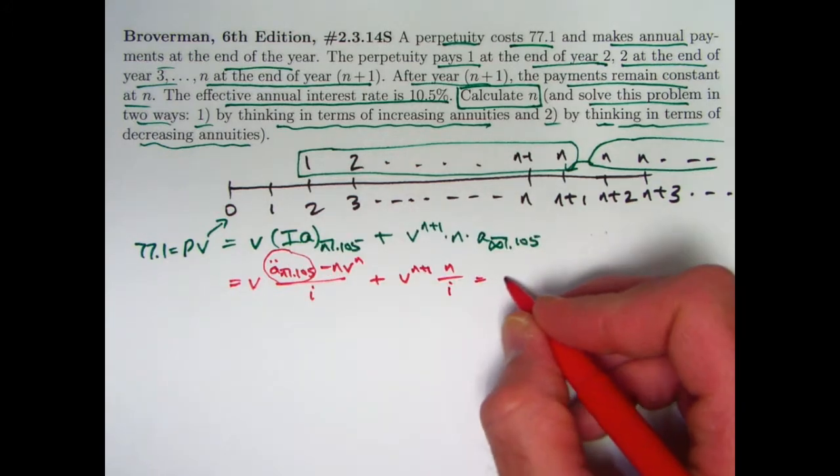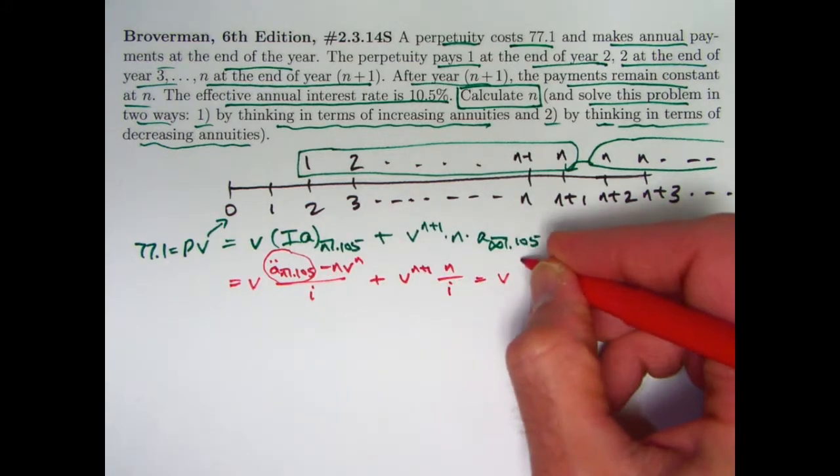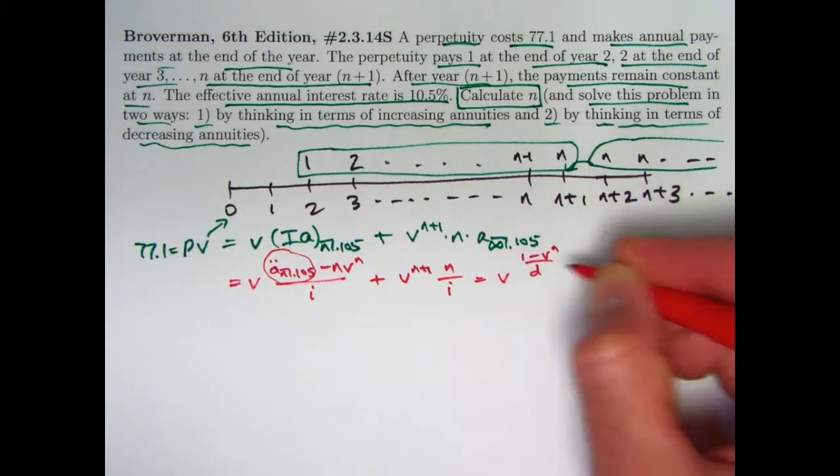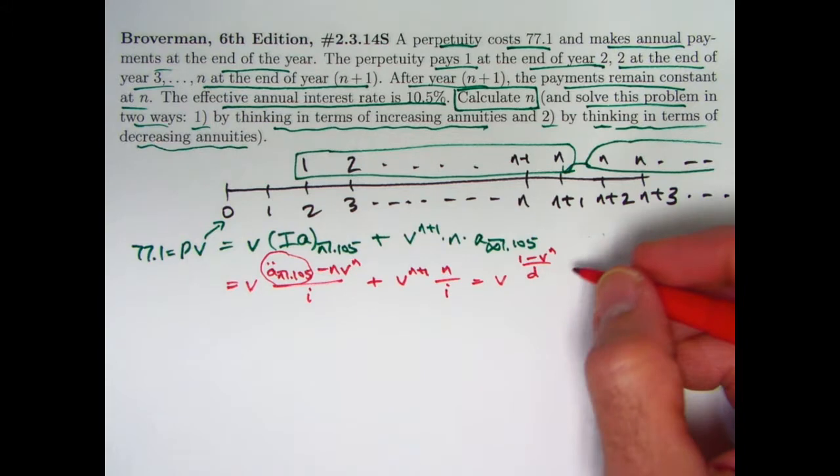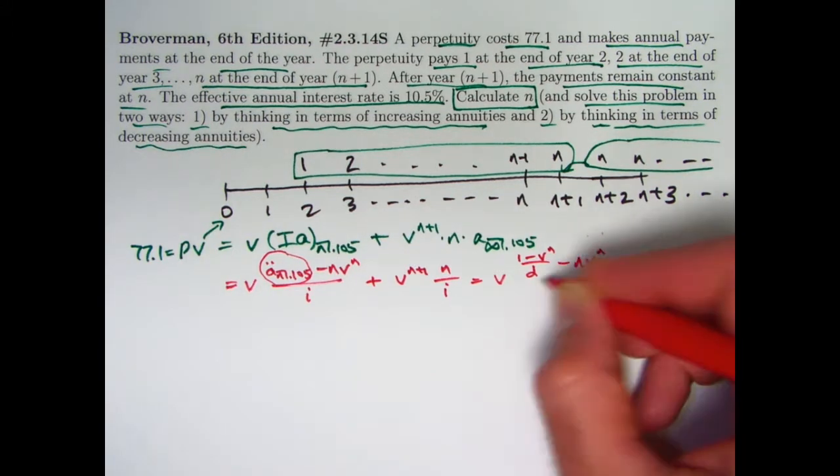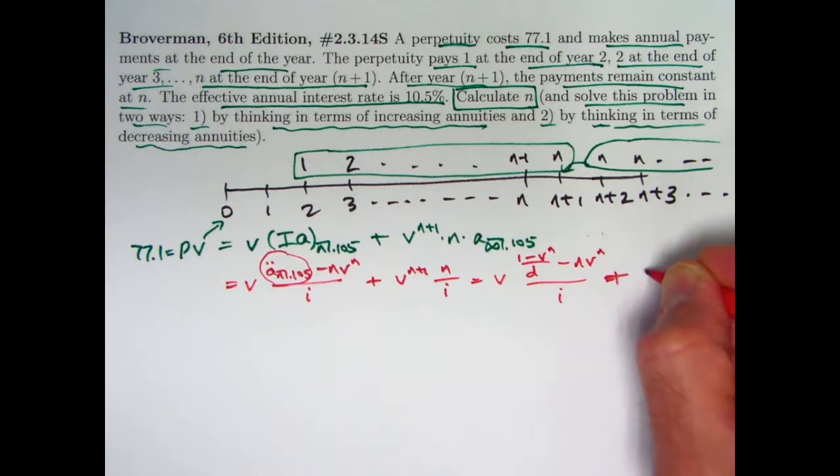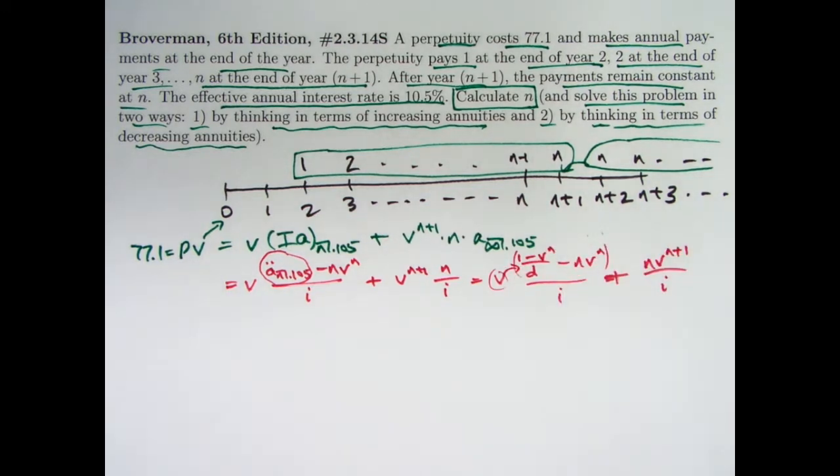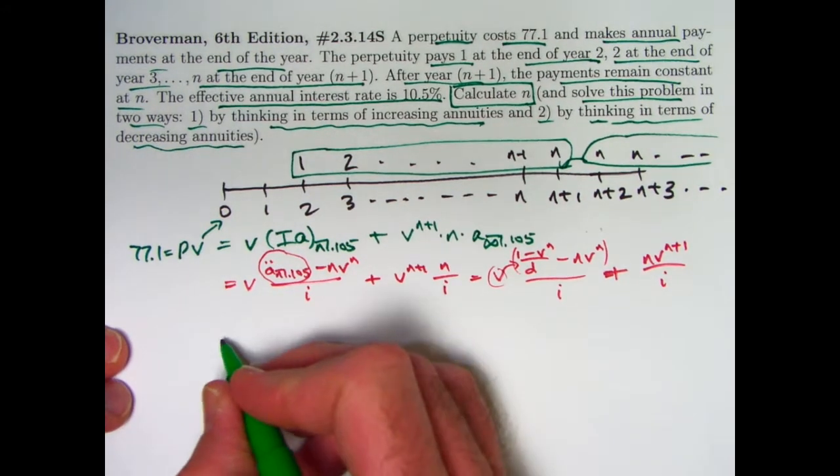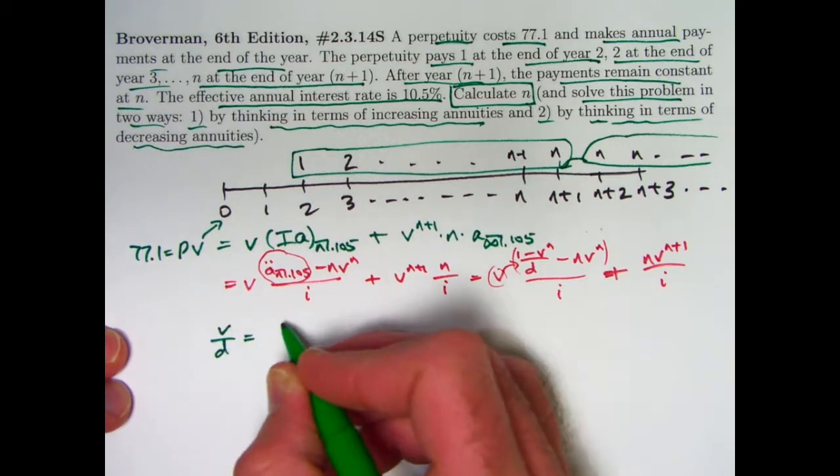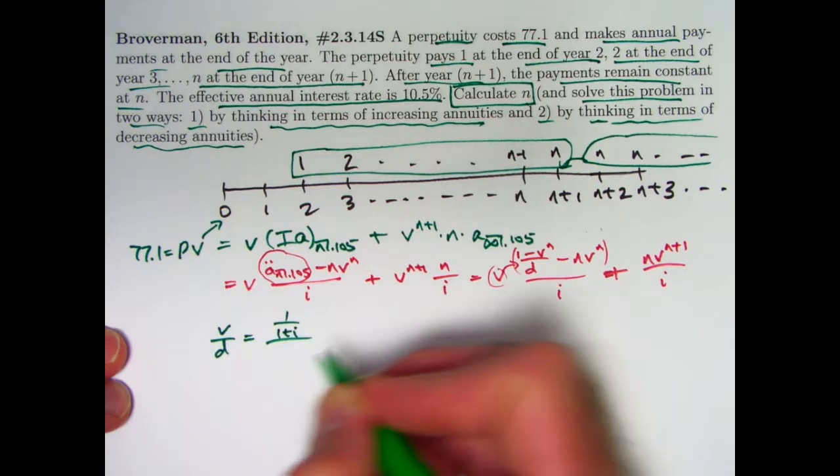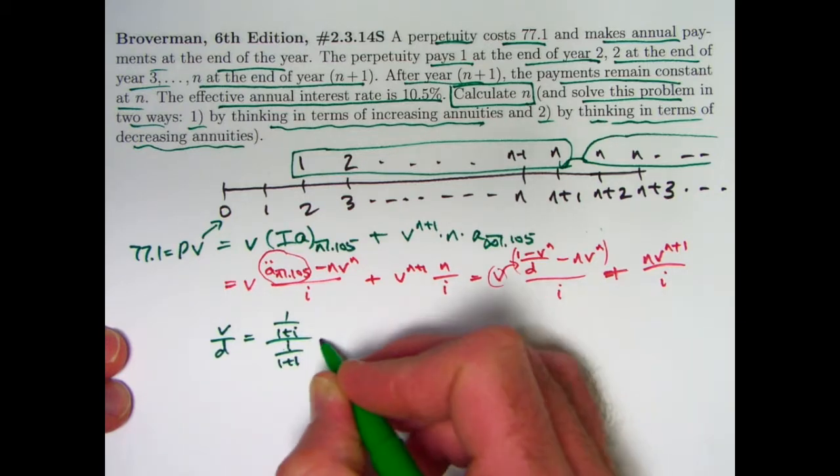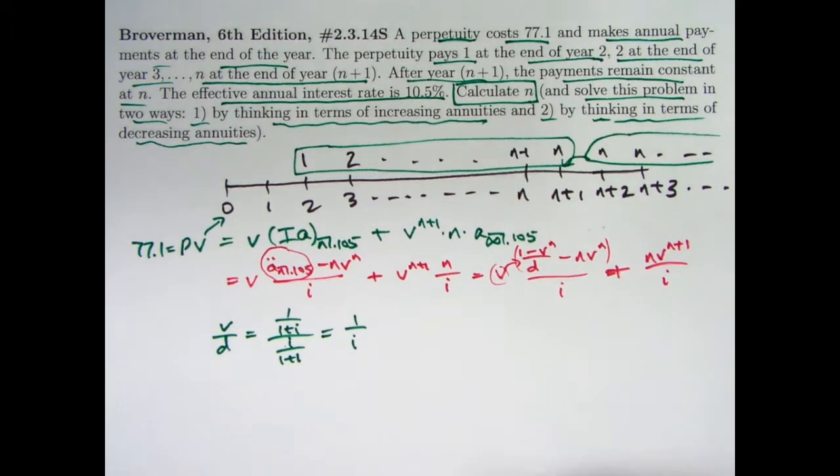What's the formula for A double dot? Its formula is 1 minus V to the N over D, where D is the present value discount rate, not factor. We have a common denominator of I. These fractions could be added. Let me go ahead and multiply the V through the top here, and use the fact that V over D simplifies. V over D. V, recall, is 1 over 1 plus I, and D is I over 1 plus I, so this simplifies to 1 over I. That's nice.